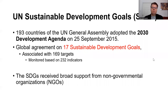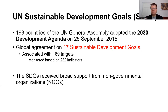It was in September 2015 that 193 countries of the United Nations General Assembly agreed on the so-called 2030 development agenda. This implied a global agreement on 17 Sustainable Development Goals, SDGs. There was also very broad support from non-governmental organizations, NGOs, on this. It's quite impressive that such a global agreement on 17 specific SDGs could be made in the United Nations.